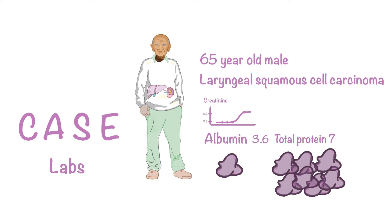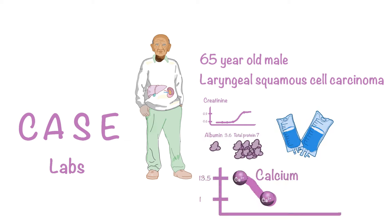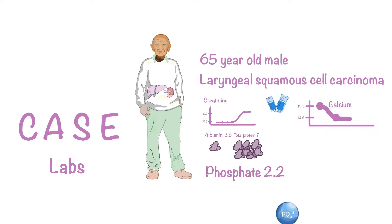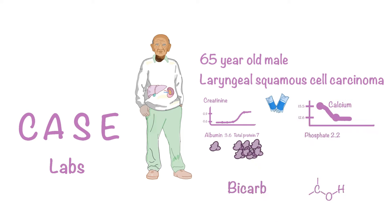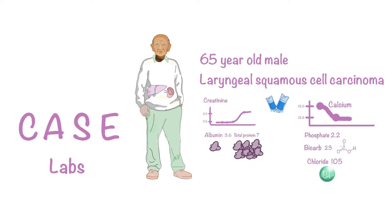His other labs were significant for a creatinine of 0.9 with a baseline of 0.6, albumin of 3.6, and protein of 7. After 2 liters of IV fluid, his calcium decreased from 13.5 to 12.6. His phosphate was 2.2, bicarb was 23, and chloride was 105.